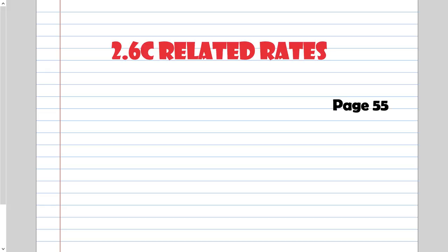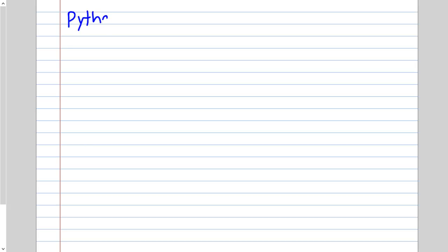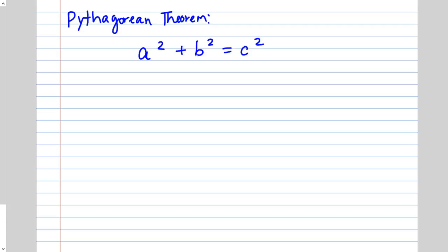Section 2.6c: related rates. In this section, we're going to be dealing with the Pythagorean Theorem. I'm sure you're familiar with a squared plus b squared equals c squared. However, for the most part I'll be writing it as x squared plus y squared equals c squared, because we are accustomed to using x and y, not really a, b, and c when dealing with equations.